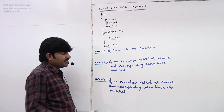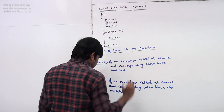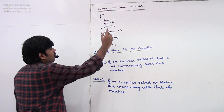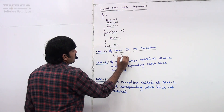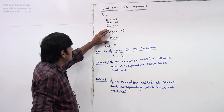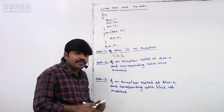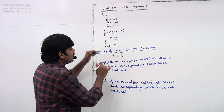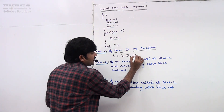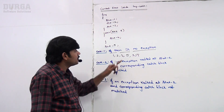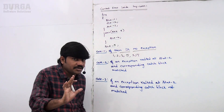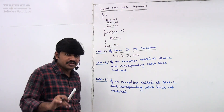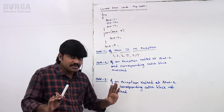First case — if there is no exception, exception does not rise at run time — which statements will be executed? One, two, three will be executed normally. Catch block won't be executed because there is no exception. If there is no exception, catch is not going to execute. Then statement five will execute, followed by normal termination. If there is no exception, except the catch block, all the remaining statements will be executed normally.